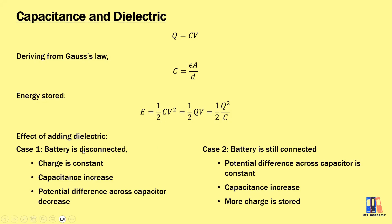If the battery is disconnected, you need to remember that the charge is constant, because there is no charge flow from the battery. So here, if we insert a dielectric, capacitance is increased and the potential difference across the capacitor is decreased, based on the formula Q = CV.